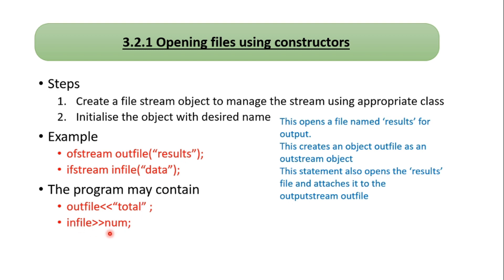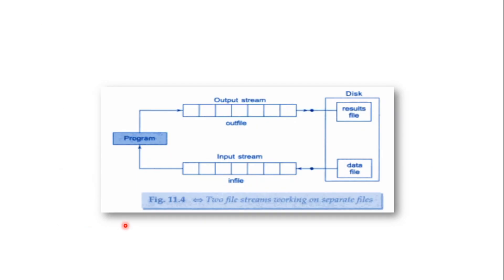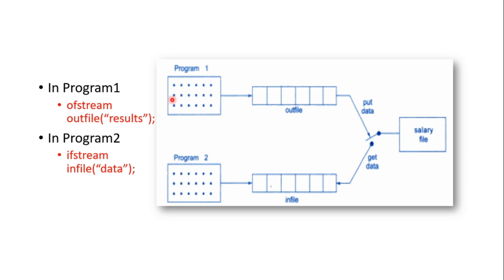What is the infile? Infile is an input stream. The data file is an input stream. This is a program — the output stream writes the results, and the infile reads the data. You will connect a real program. If you want to use the name of the file, you will connect it for a trial. You can connect the first program with an input stream and an output stream.